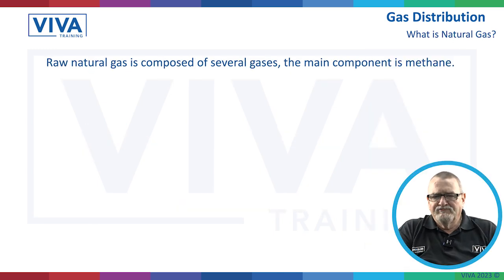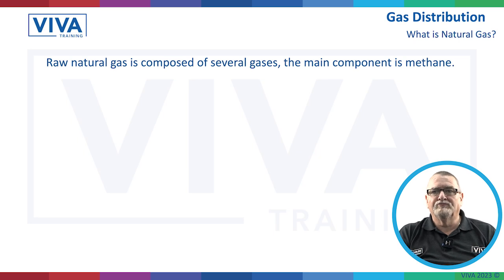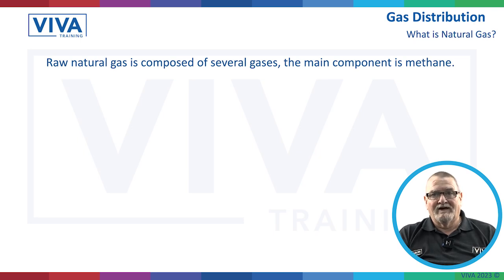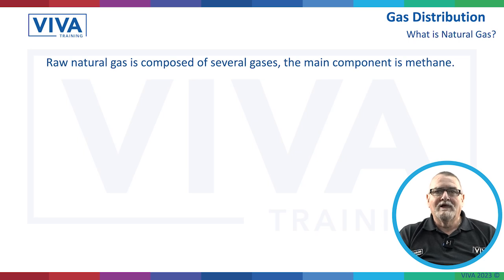The raw natural gas is composed of several gases — it doesn't just come straight out of the ground as natural gas as we know it. The main constituent of natural gas is methane. That's where the chemical symbol CH4 comes from. If you did chemistry at school, you might remember that.